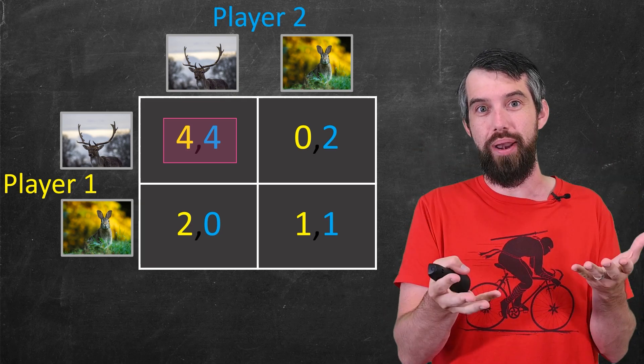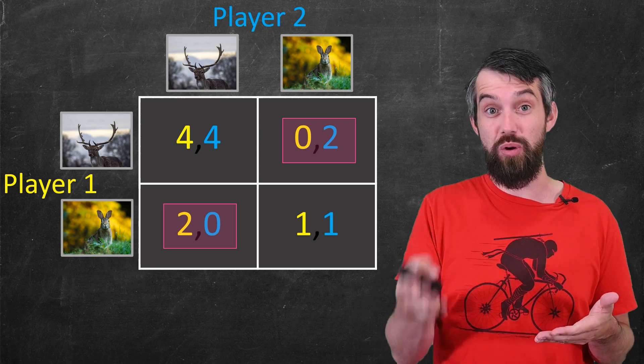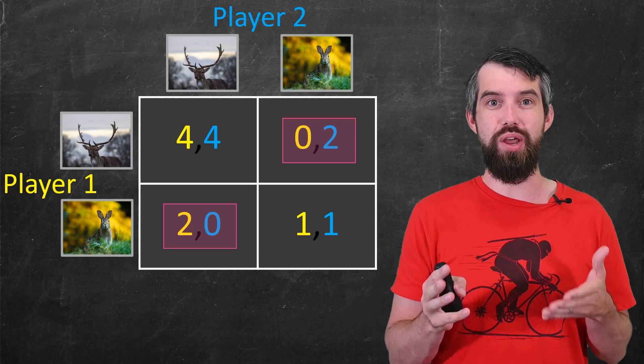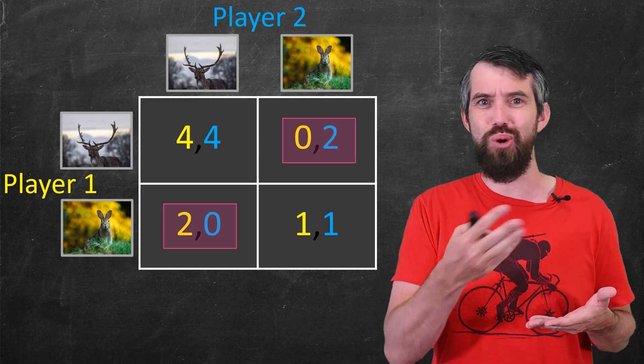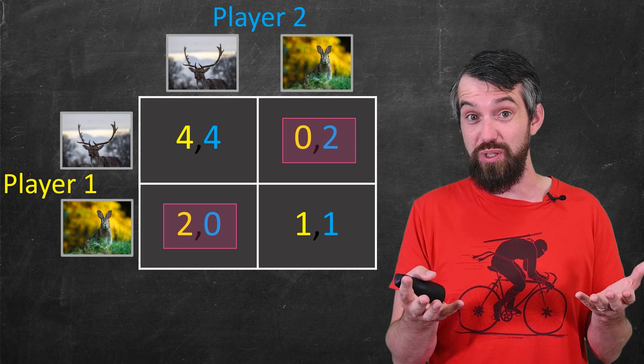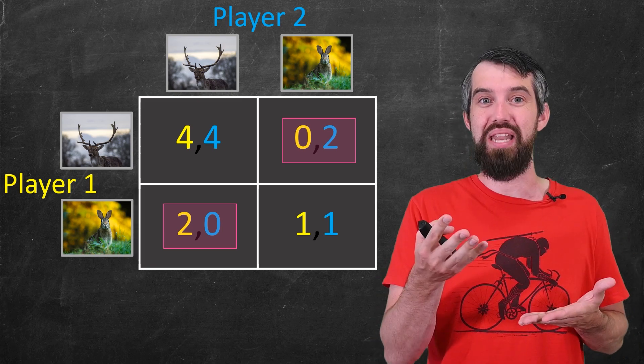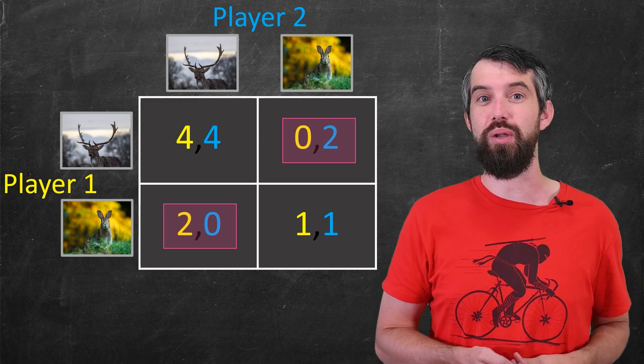The ones on the off-diagonal where one player plays hare and the other plays stag, or vice-versa, are clearly not going to be Nash Equilibrium because nobody's going to want to accept the 0. If they played stag and found out that the other person was playing hare, they'd be like, no, I want to switch. I want to play hare as well. 1 is better than 0. So neither of these off-diagonal ones are Nash Equilibrium.